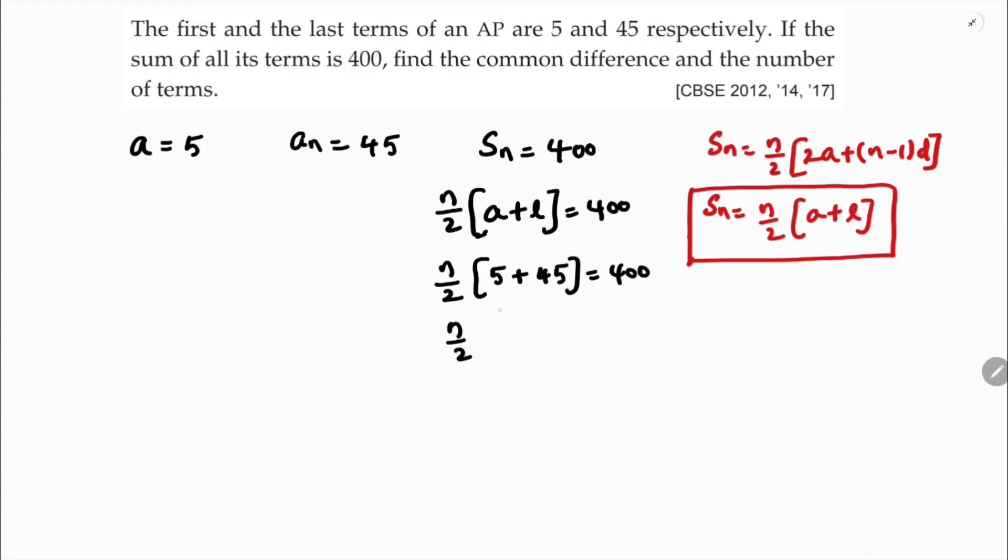So n equals 400 times 2 by 50. Transposing, division becomes multiplication and 50 becomes division. Cancel the zeros. 5 times 1, 5 times 8, so n equals 16.